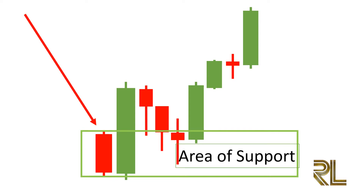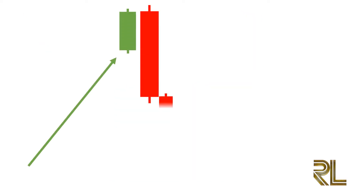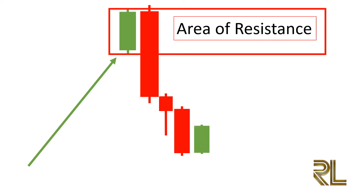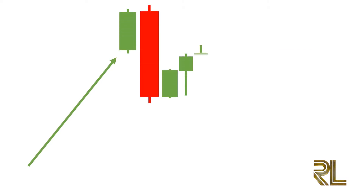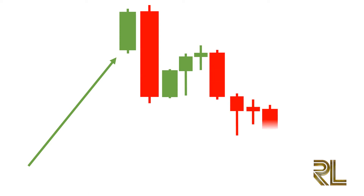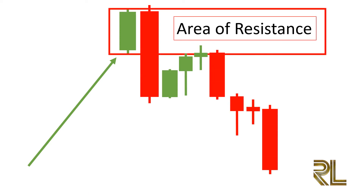Similarly, after a bearish engulfing pattern has formed and prices continue to move down, the previous buyers from the bull candlestick are suffering a paper loss and will be looking to exit their trades at breakeven, with sell trades forming an area of resistance. If prices move back up into the range of the bull candlestick body, the previous buyers will immediately exit their positions with sell trades, pushing the market price down again.